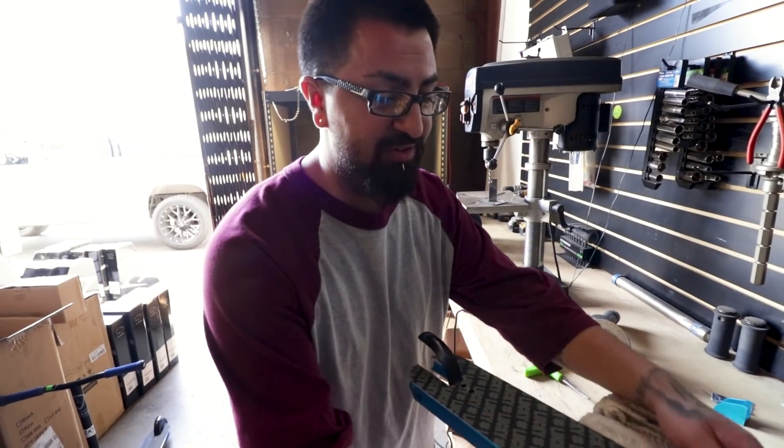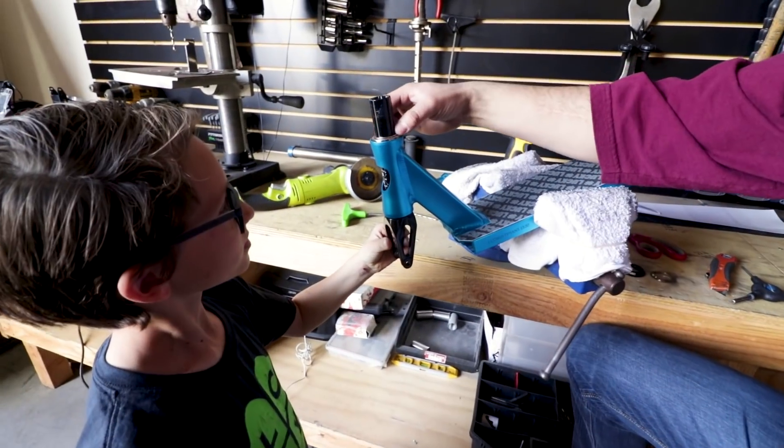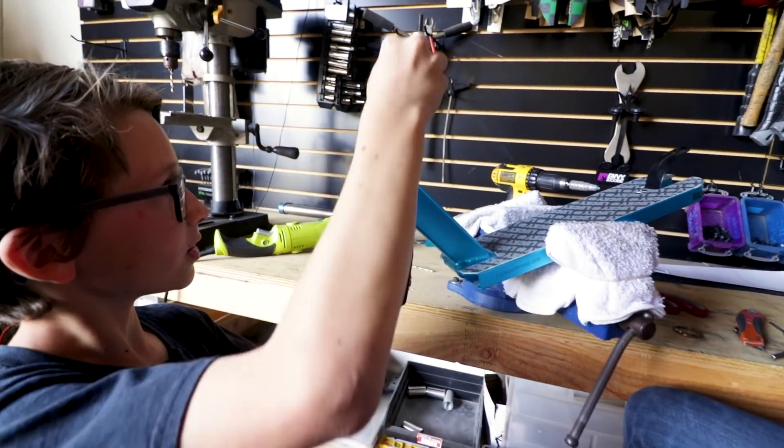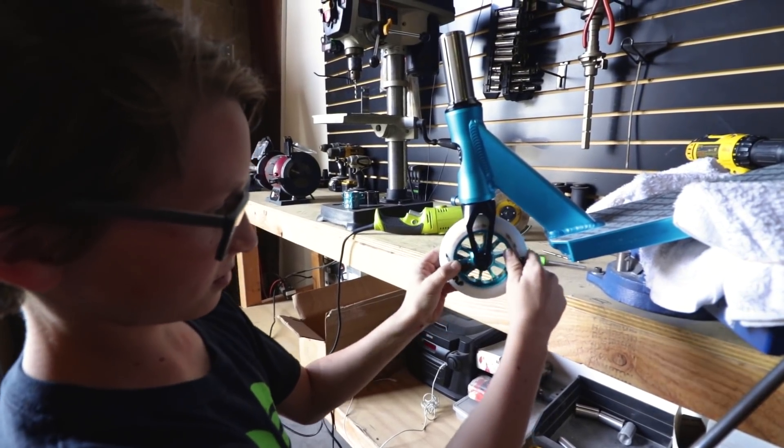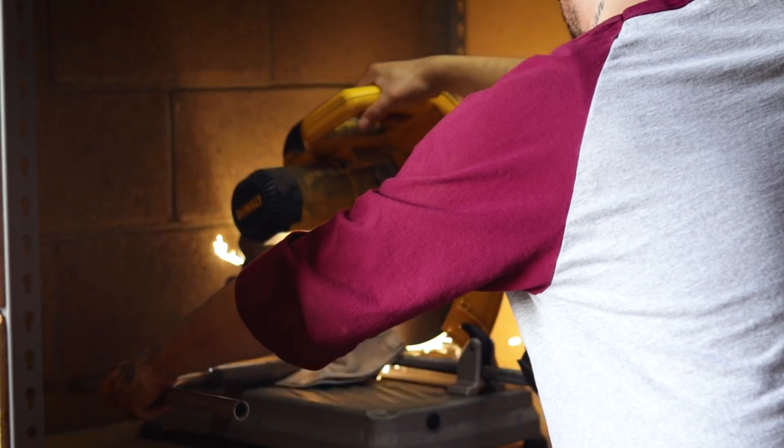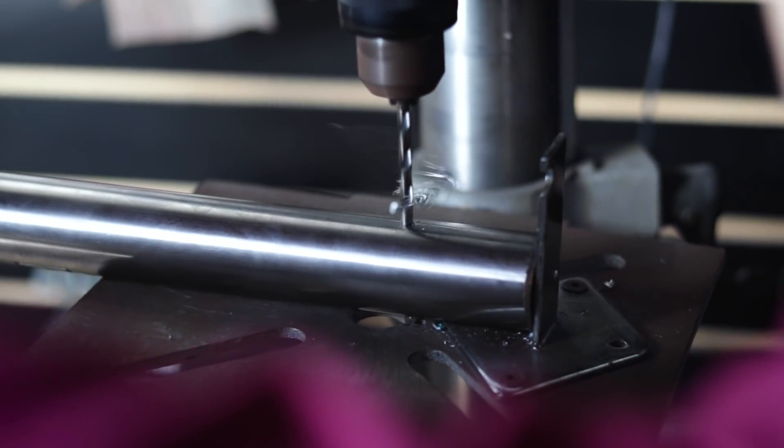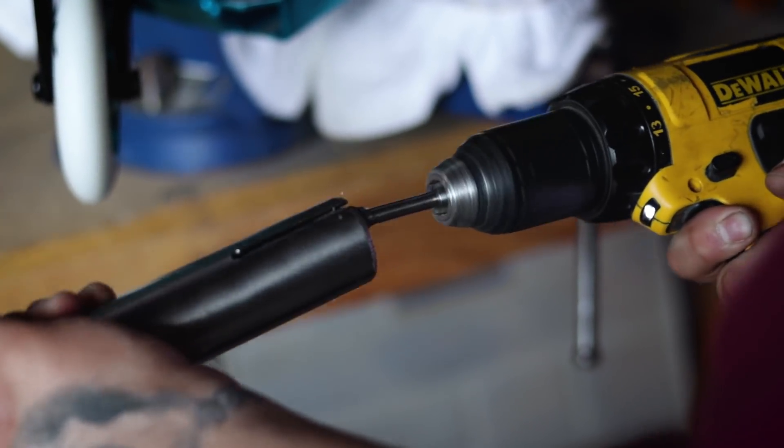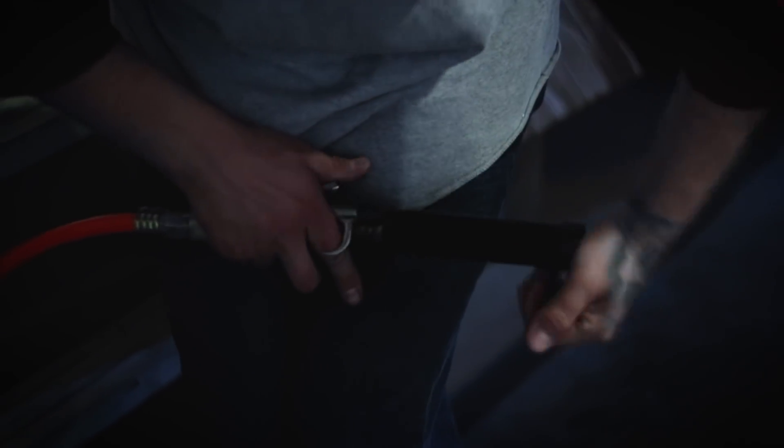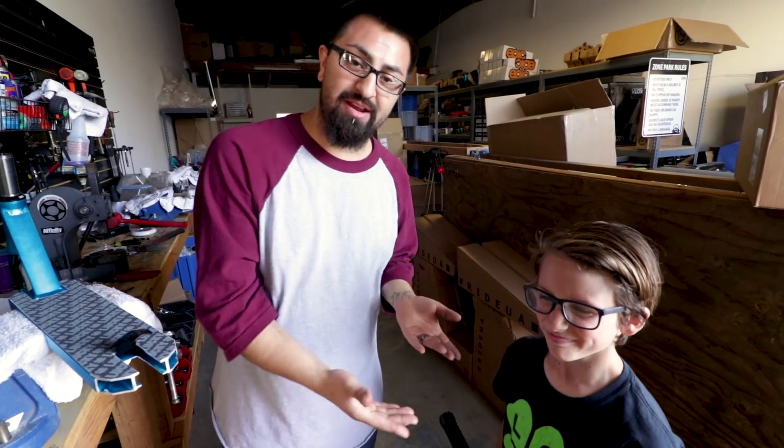Let's get Brig in here to help us finish the rest of the scooter. Perfect. Let's do it. Okay, so we just finished installing the grips, cutting the titanium bars down, and installing the clamp. As you see right here, that Brig is holding.